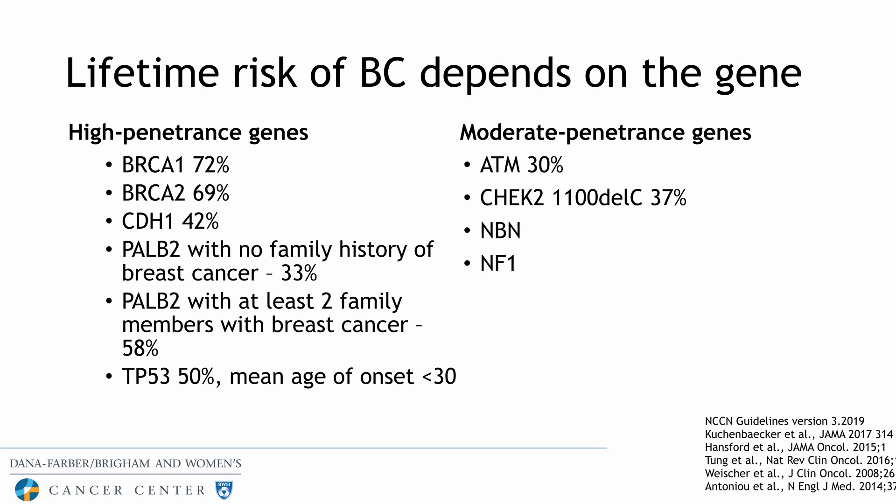What we do clinically depends on the specific gene. High penetrant genes like BRCA1 and 2 carry a lifetime breast cancer risk between 50% and 85%. Moderate penetrant genes — including ATM, CHEK2, NBN, and NF1 — carry an increased but lower risk. Other high penetrant genes in addition to BRCA1 and 2 include CDH1, PALB2, and TP53. The average lifetime breast cancer risk is 12%; we consider a person high risk above 20%, with high penetrant genes really conferring risk above 40%.